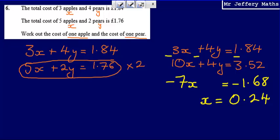Now if I then just think about what I know, I now know that the cost of an apple is 24p. So that means that 3 apples would be 3 lots of 24p, or I can say it's 72 pence. So if 3 apples is 72p, and I know that 3 apples and 4 pears is £1.84, again, I can set up another equation.